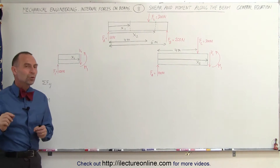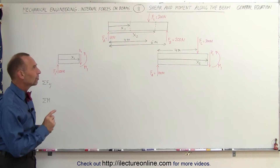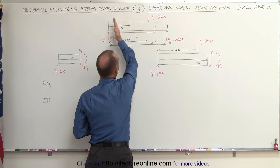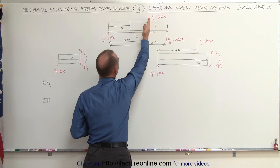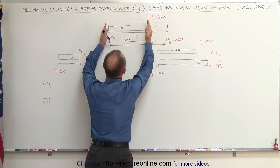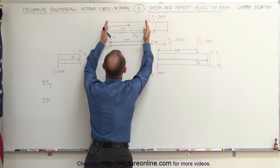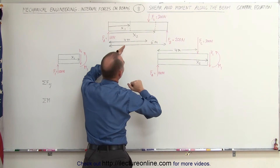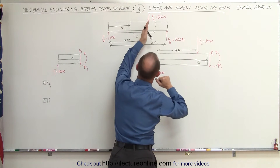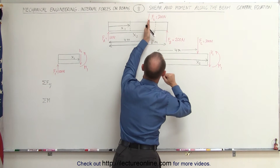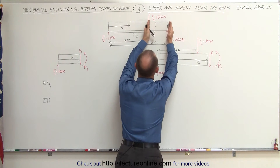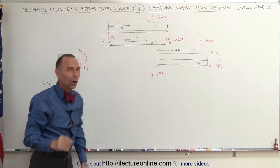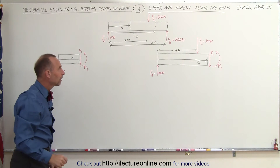Since we have a point load force at a distance of four meters, we will have equations from the left side to the four-meter point, and then a different set of equations from the four-meter point to the end. You'll see in just a moment why we do that.